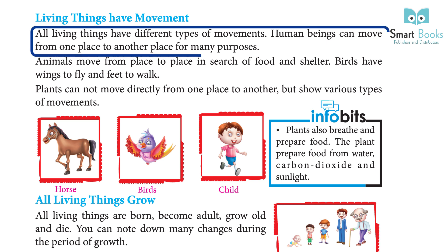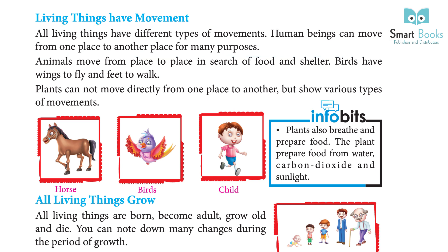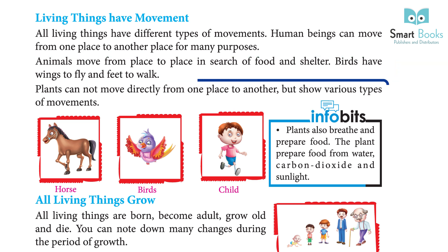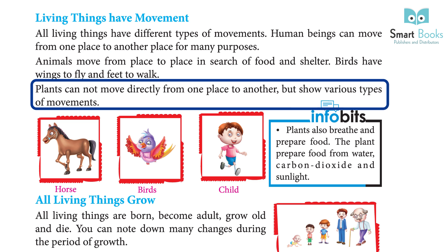All living things have different types of movement. Human beings can move from one place to another for many purposes. Animals move from place to place in search of food and shelter. Birds have wings to fly and feet to walk. Plants cannot move directly from one place to another, but show various types of movements.